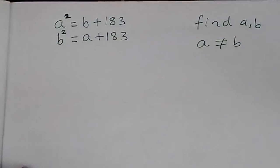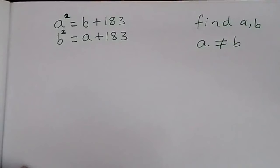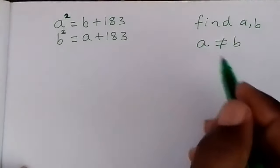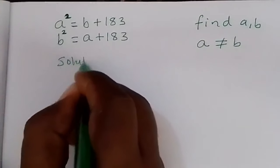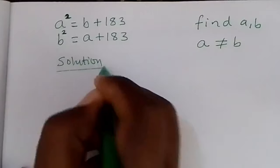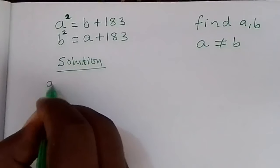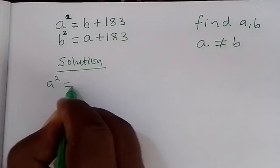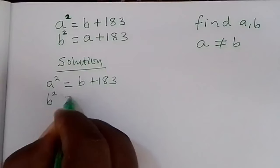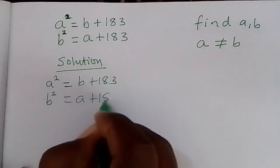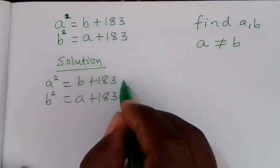Hello and welcome. How to solve this math olympiad problem: a squared equals p plus 1/3, and p squared equals a plus 1/3. Find a comma p, given the condition that a is not equal to p. So, given that equation 1 is a squared equals p plus 1/3, and equation 2 is p squared equals a plus 1/3.